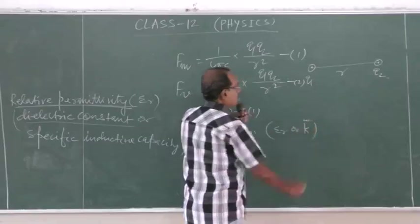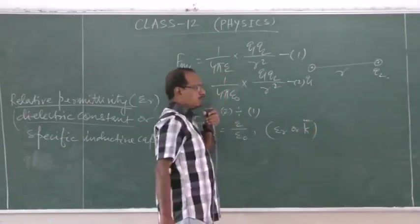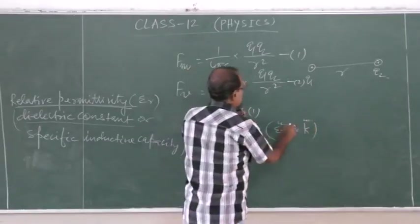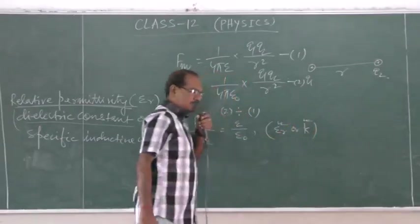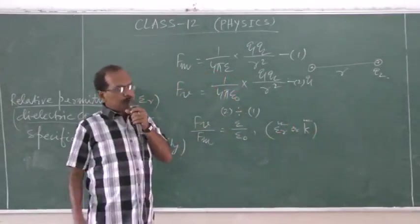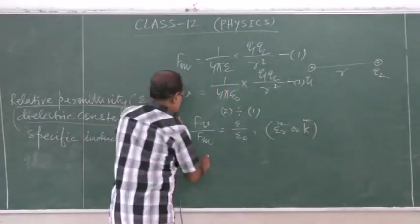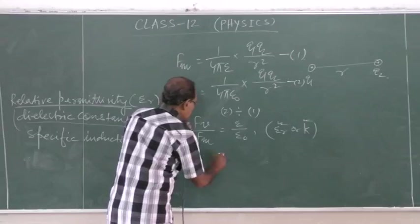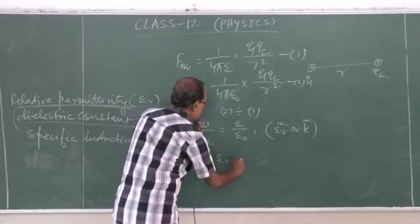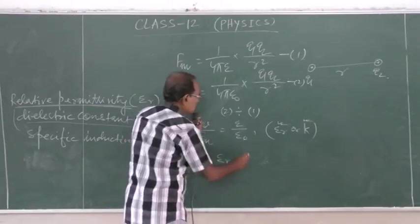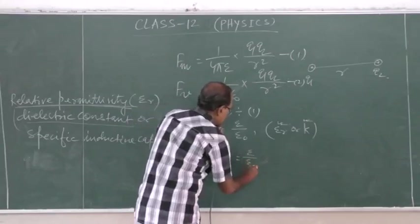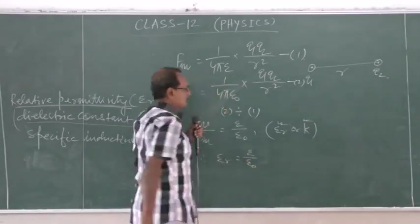We are writing εr for dielectric constant and for relative permittivity — both terms are the same. Therefore, εr is equal to ε divided by ε₀.